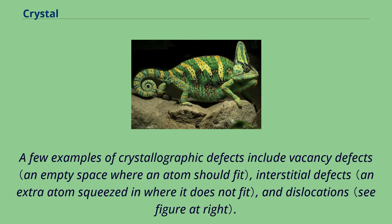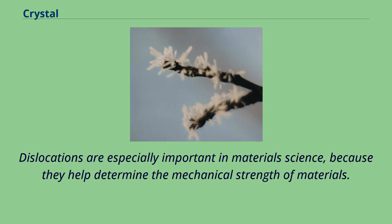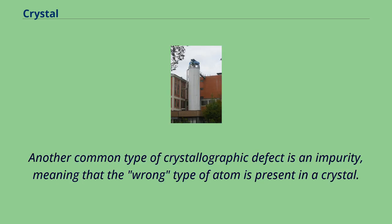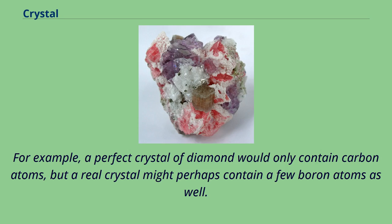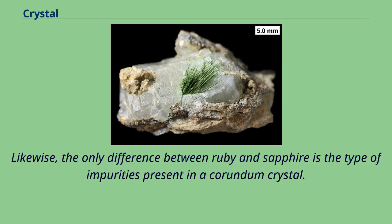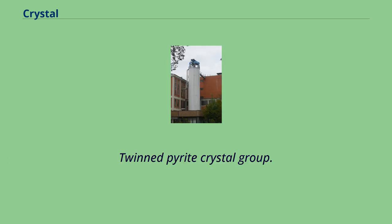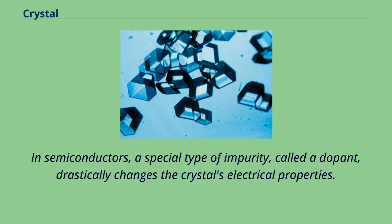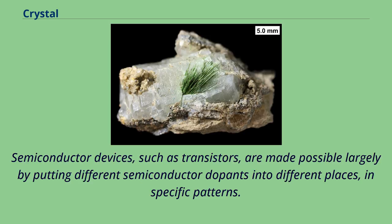Dislocations are especially important in material science because they help determine the mechanical strength of materials. Another common type of crystallographic defect is an impurity — meaning that the wrong type of atom is present in a crystal. For example, a perfect crystal of diamond would only contain carbon atoms, but a real crystal might contain a few boron atoms as well, which change the diamond's color to slightly blue. Likewise, the only difference between ruby and sapphire is the type of impurities present in a corundum crystal. In semiconductors, a special type of impurity called a dopant drastically changes the crystal's electrical properties. Semiconductor devices such as transistors are made possible largely by putting different semiconductor dopants into different places in specific patterns.